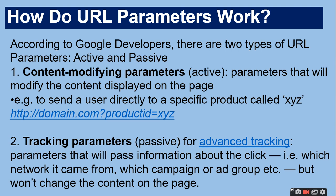The second type is the tracking parameter, which is a passive parameter. It is used for advanced tracking. These are parameters that will pass information about the click — such as which network it came from, which campaign or ad group — but won't change the content of the page.